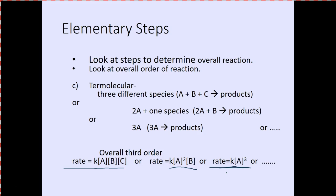In these kinds of problems, you're going to be given the rate law and a series of elementary steps that could be a possible mechanism. You have to use that information to determine if that mechanism is correct or not. The key concepts are unimolecular, bimolecular, and termolecular — and using the elementary steps to determine the order.